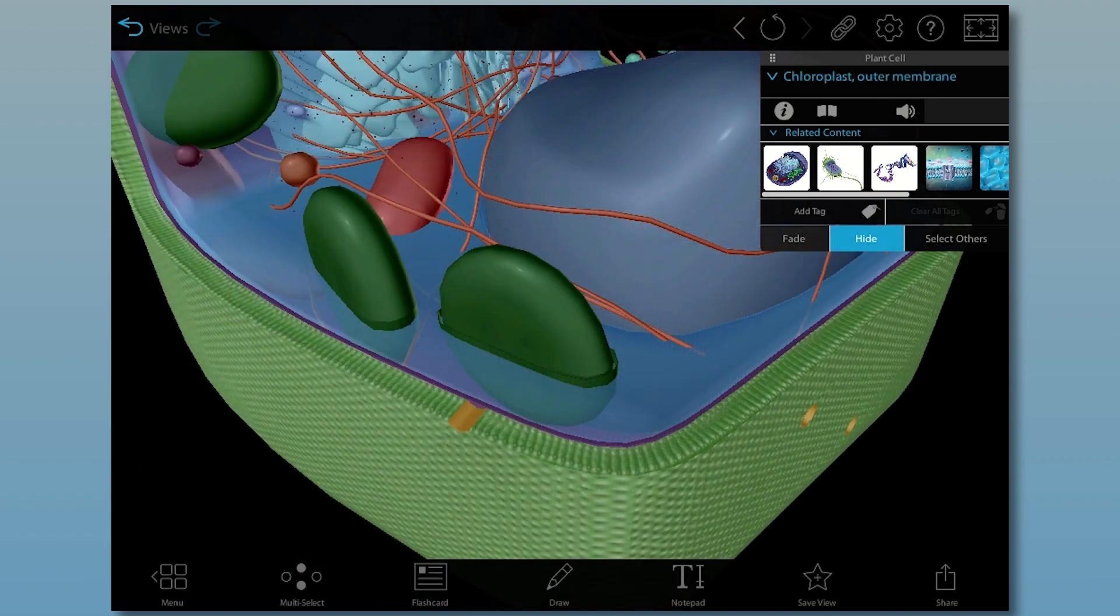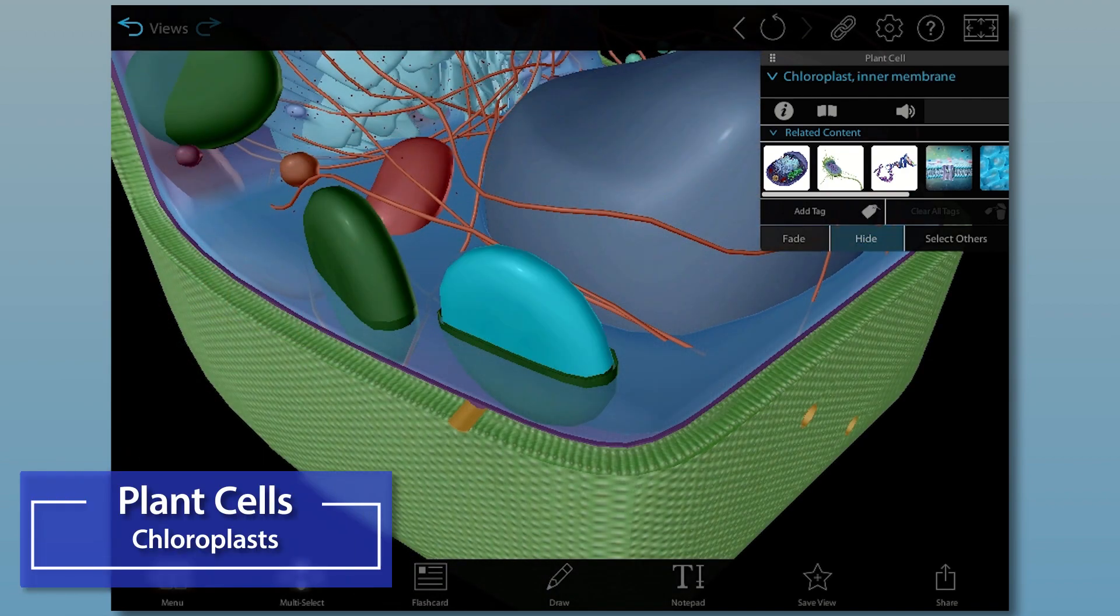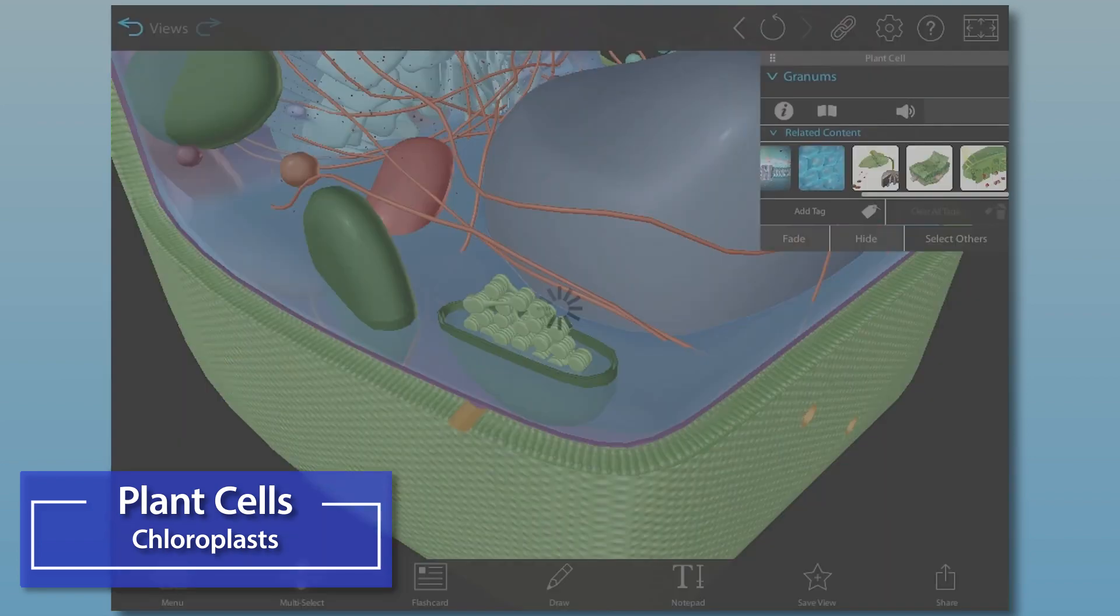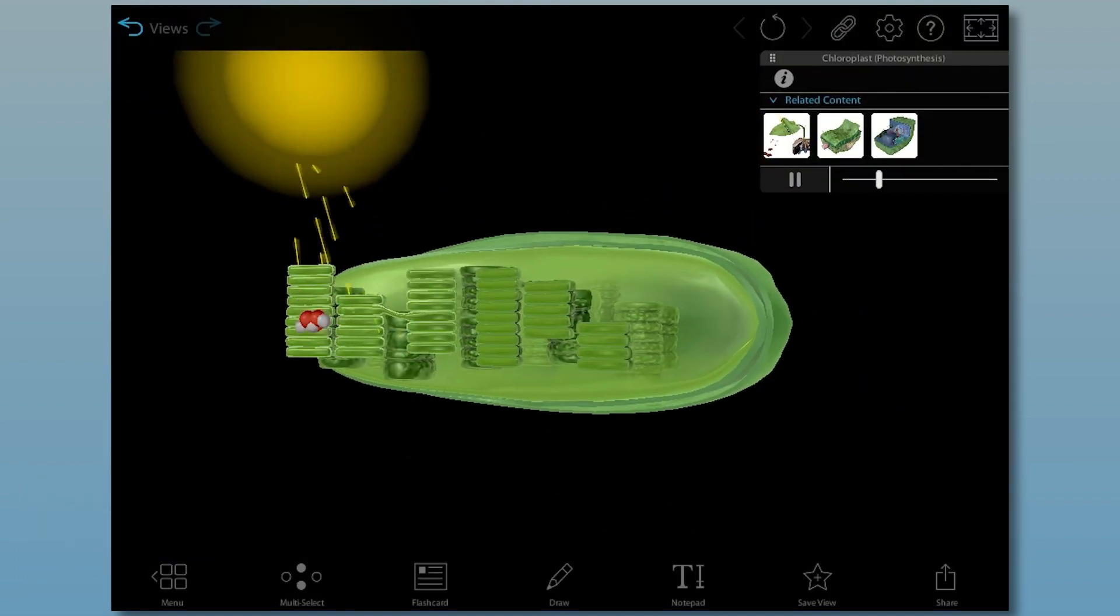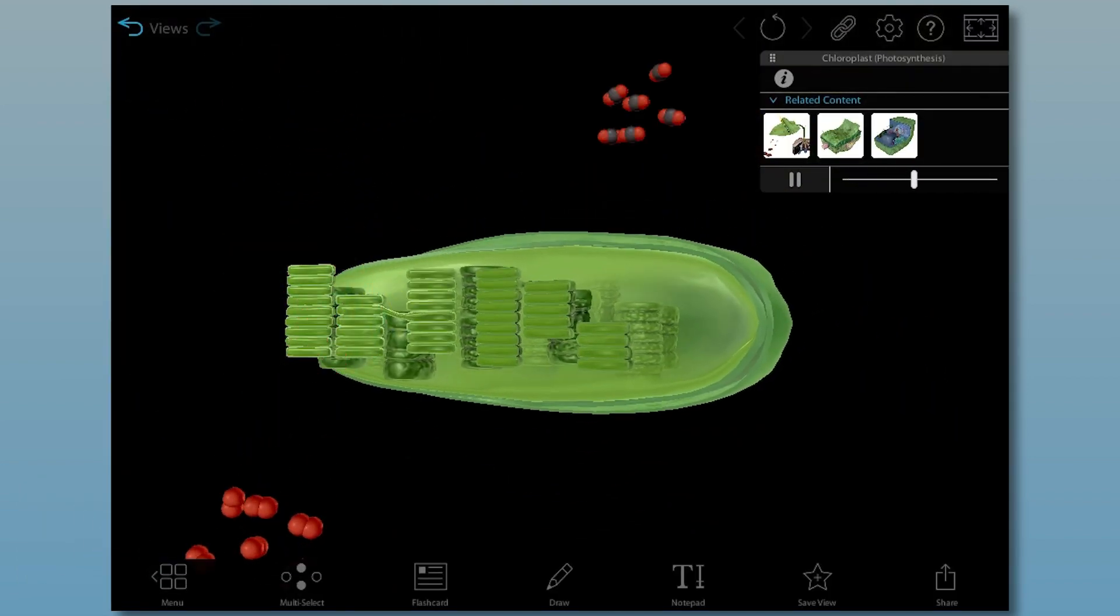Lastly, and most importantly, plant cells have chloroplasts. These specialized organelles allow plants to carry out photosynthesis, the process in which they use sunlight, carbon dioxide, and water to create their own food.